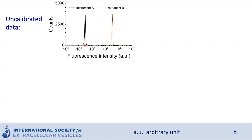We don't expect this difference because it's the same sample measured on a flow cytometer. But the problem is that because we are in the arbitrary unit regime, we cannot interpret the data, and we cannot compare it between instrument A and instrument B. Additionally, the sensitivity and dynamic range of the instruments cannot be compared. There are resources out there where you can learn more about that.